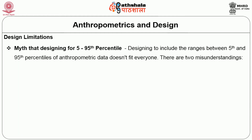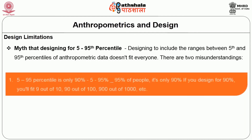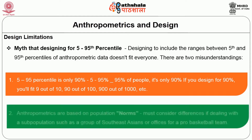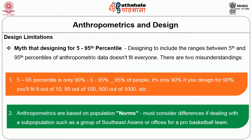The second myth is designing for the 5th or the 95th percentile. Designing to include the range between the 5th and 95th percentile of anthropometric data doesn't fit everyone. The 5th to 95th percentile is only 90 percent of the population — if you design for 90 percent, you fit 9 out of 10, or 900 out of 1000. Anthropometrics are based on population norms, so you must consider differences when dealing with sub-populations such as Southeast Asians or offices for a pro basketball team.